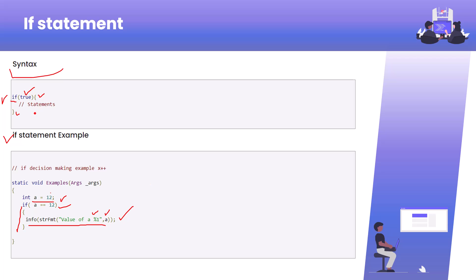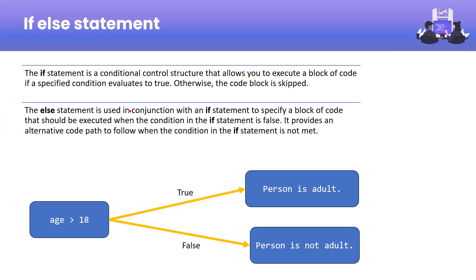If the condition is true it will run, but if it is false we can execute another block — that's where the else block comes in. The if condition is a conditional control structure that allows you to execute a block of code if a specified condition evaluates to true; otherwise the code of the if block is skipped. The else statement is used in conjunction with the if statement to specify a block of code that should be executed when the condition in the if statement is false.